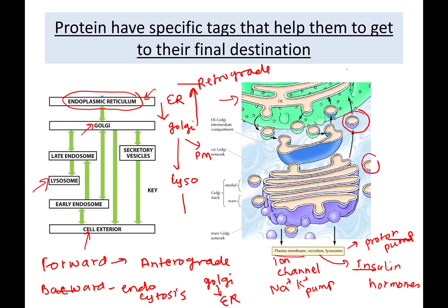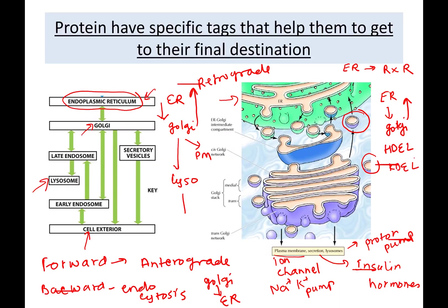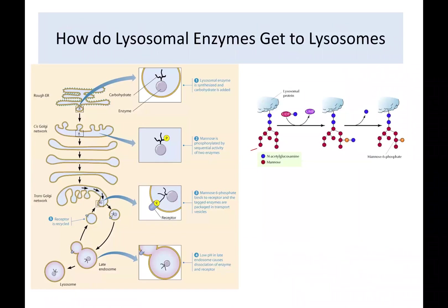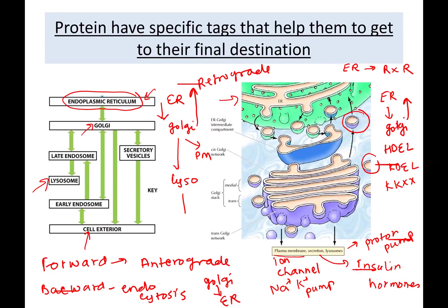If a protein needs to stay in the ER, it has a tag called RXR — where R stands for arginine. If a protein needs to go to the Golgi for specific glycosylation and then return to the ER, the retrieval tag is HDEL, KDEL, or KKXX. If a protein has one of these tags, it will be brought back to the ER.